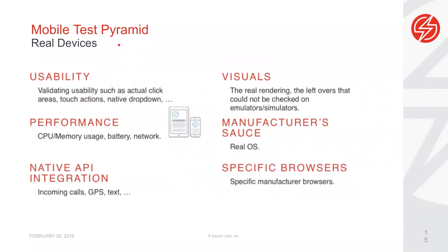What can we use real devices for? Usability testing — actual clicking, touch actions, and native dropdowns. Performance testing to see how well your application behaves on a real device. Native API integrations like testing calls and GPS. Visual testing to ensure your application looks how you want it to on those devices — especially with Android, where you get the real operating system with native skins and potential breakages. And you can test specific browsers like Safari on iOS, which only comes with an iOS device and can't be installed on Android.